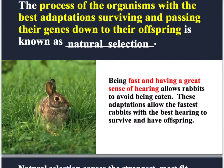The process of organisms with the best adaptations surviving and passing on their genes to their offspring is known as natural selection. It's called 'natural' selection because nature is essentially selecting them — humans don't really have a big part to play in it. Natural selection is what happens when organisms with the best adaptations mate, have offspring, and pass those adaptations down in their genes.